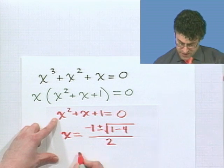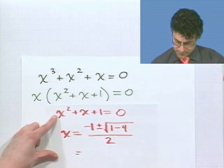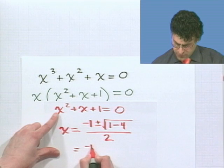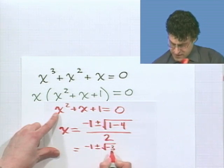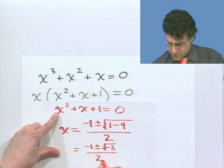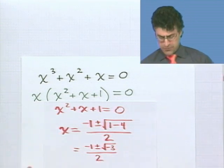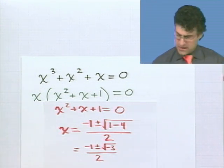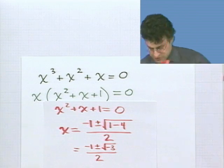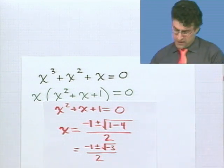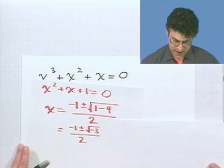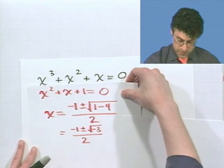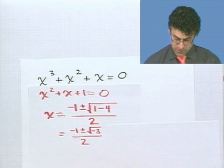So, what does this work out to be? Well, this works out to be negative 1 plus or minus the square root of negative 3 all over 2. Well, the square root of negative 3, how could I write that in a slightly more comfortable way? Well, I could say the following. I could say, hey, you know what? If you want square root of negative 3, I will give you square root of negative 3. And here's how it would look.